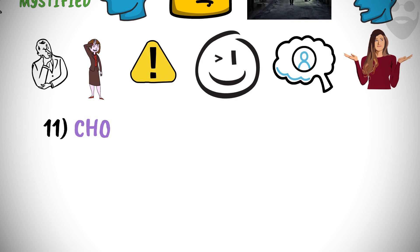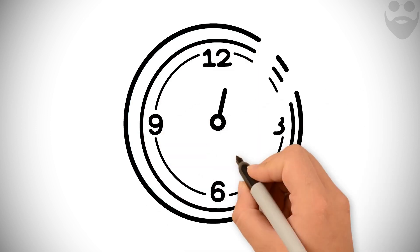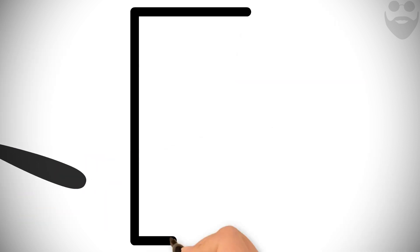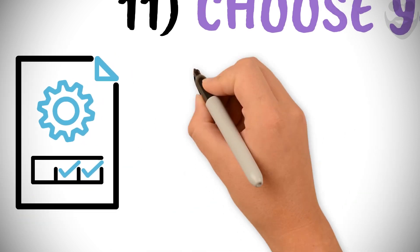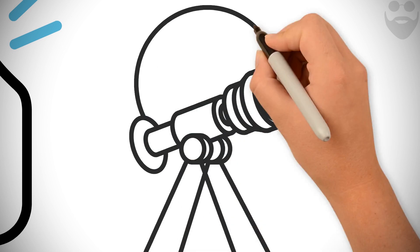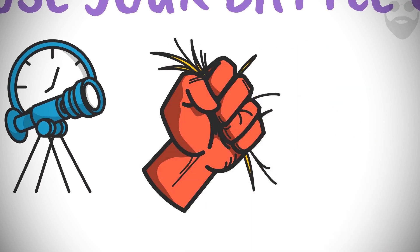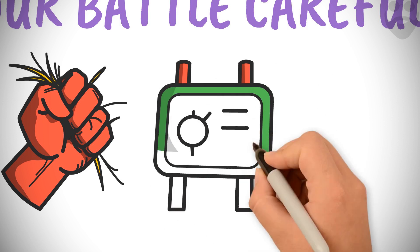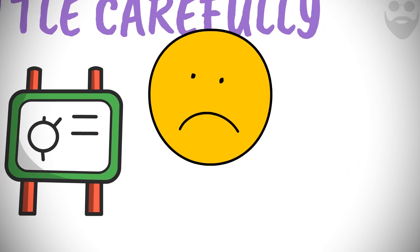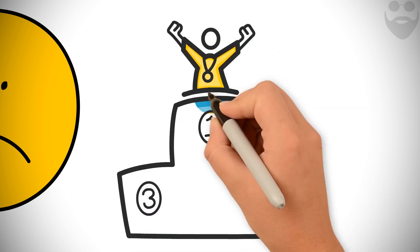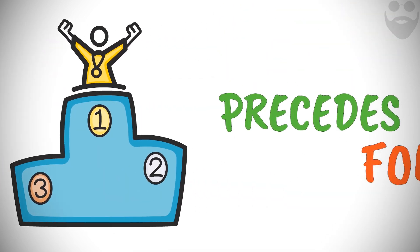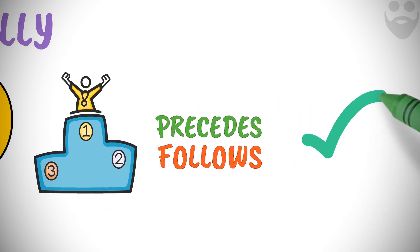11. Choose your battle carefully. We have limited time, energy, and resources in life. Don't make decisions lightly. Choose your passion carefully, and then give it your very best while doing everything in your control. Epictetus advises, In every affair, consider what proceeds and follows, and then undertake it. Otherwise, you'll begin with spirit, but not having thought of the consequences, when some of them appear, you'll shamefully desist. I would conquer at the Olympic Games, but consider what proceeds and follows, and then, if it is for your advantage, engage in the affair.